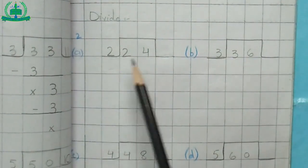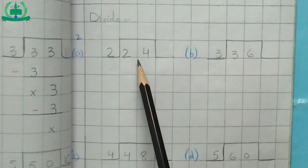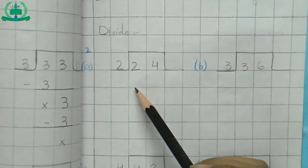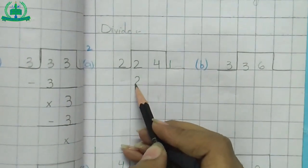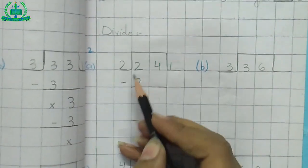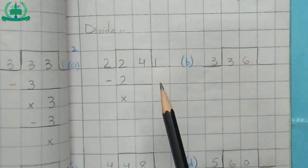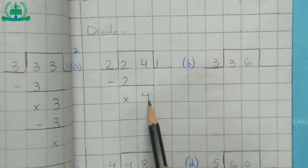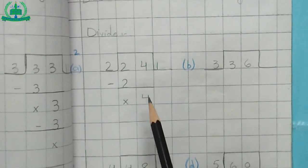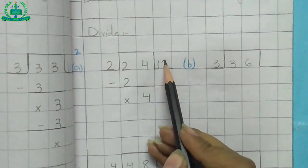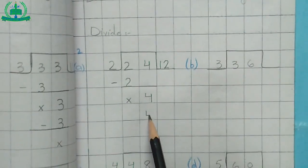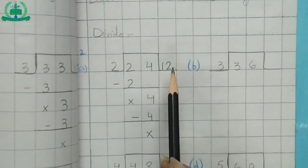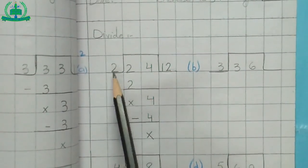Part 2, Question A: 24 divided by 2. How many 2s does it take to make 24? We solve it digit by digit. First digit is 2. 2 one time is 2. 2 minus 2, there is no remainder. Now we move to our next digit which is 4. Copy 4. How many times do we need 2 to make 4? 2 two times is 4. 4 minus 4, there is no remainder. So the answer is 12. 24 divided by 2 is equal to 12.